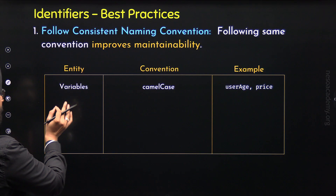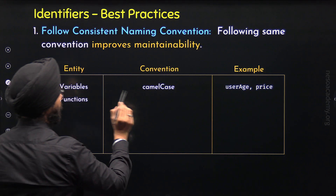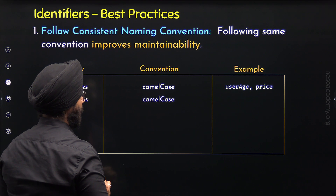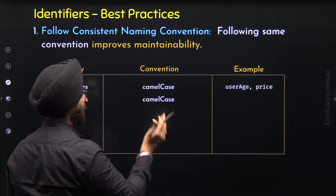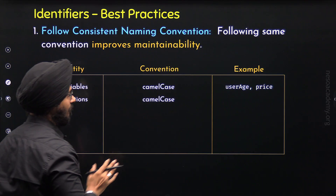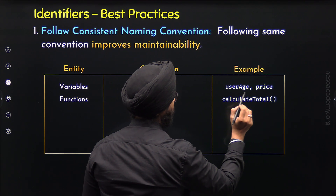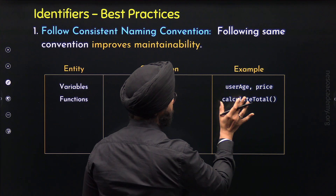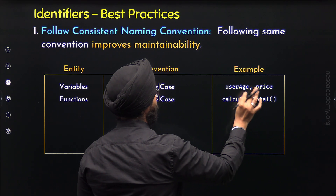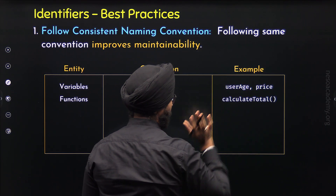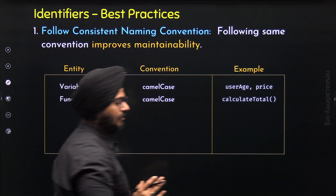Now let's move to the second entity: functions. Functions can also follow camel case convention. This means the first letter of the second word must be capitalized, and the rest of the letters must be all lowercase. For example, here we have the function name calculateTotal. This name is formed from two words, Calculate and Total. The first letter of the second word is capitalized, which is T, and the rest of the letters are all lowercase.